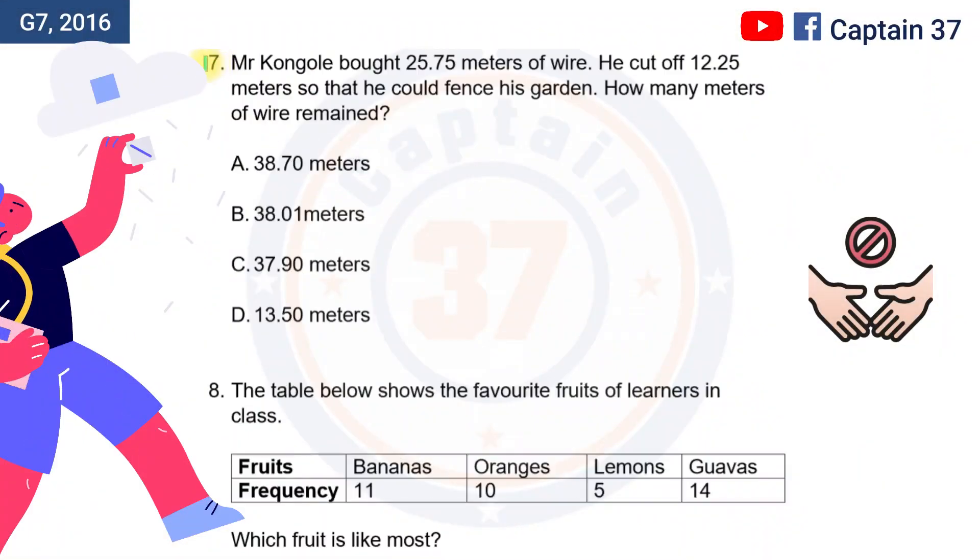Question number 7. Mr. Kongole bought 25.75 meters of wire. He cuts off 12.25 meters so that he could fence his garden. How many meters of wire remained?